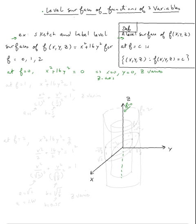Now what about f = 1? At f = 1, we're going to have f(x, y, z) which is x² + 16y² = 1.